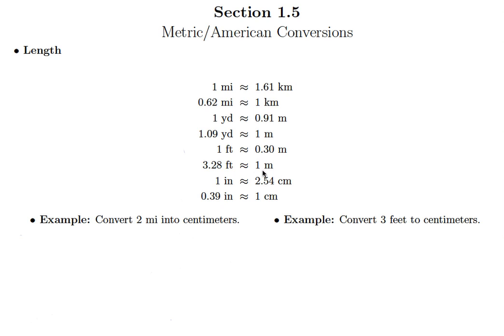We're going to focus on length here in this video and we're given a lot of different equivalencies to take a look at. You might notice the equal signs aren't really equal signs, they're squiggly equal signs, and what that means is that these are only approximations. So that first one says one mile is approximately equal to 1.61 kilometers. That squiggly line means approximately equal to.